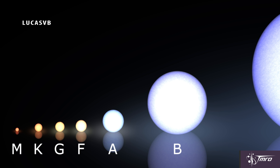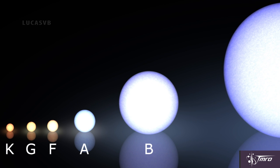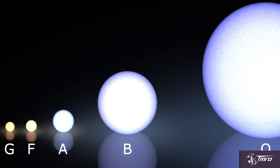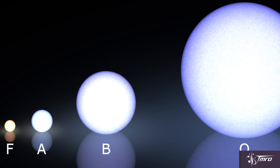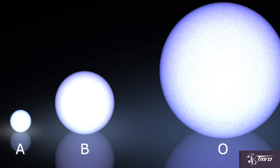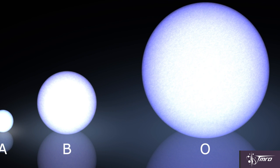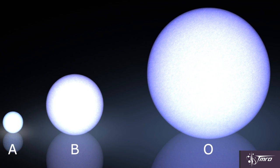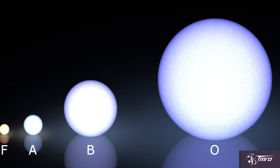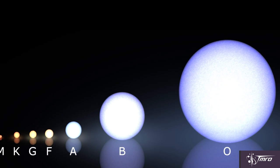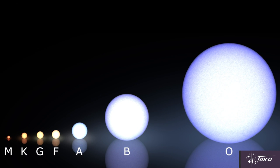From lowest to highest surface temperatures, the letters go M, K, G, F, A, B, O. You'll notice that the hotter stars are blue and the cooler stars are red — opposite of what you may find on your water taps.